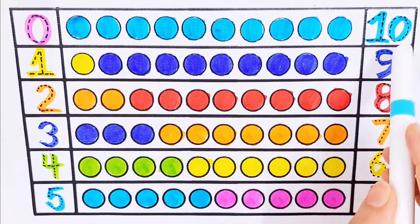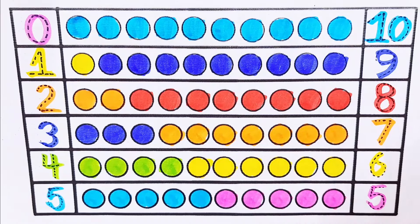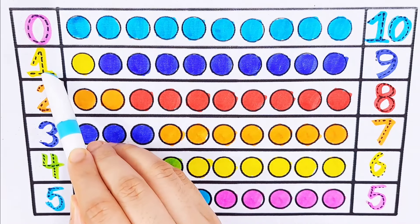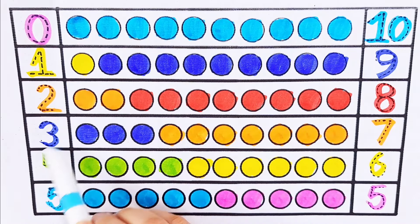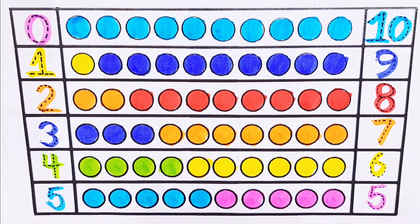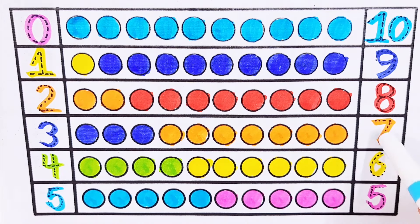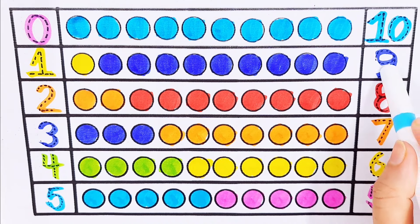0 plus 10 equals 10. 0, 1, 2, 3, 4, 5, 6, 7, 8, 9, 10.